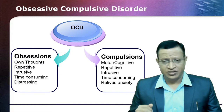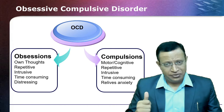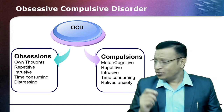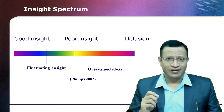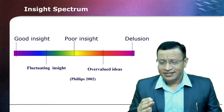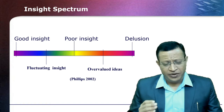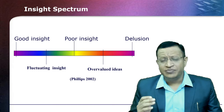Coming to compulsions: compulsions are motor or cognitive acts which are repetitive, intrusive, and time-consuming, but they relieve anxiety. These are the hallmark of obsessive-compulsive disorder. At the same time, insight into the symptoms varies. At one end, patients have good insight; on the other hand, poor insight amounting to delusions. The insight varies within a patient and also across the patient population. At the height of anxiety, the patient may say 'I believe in these thoughts,' but when anxiety is absent, he says they are all absurd thoughts.